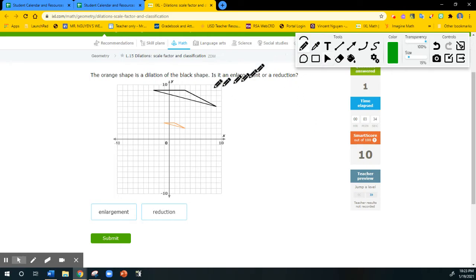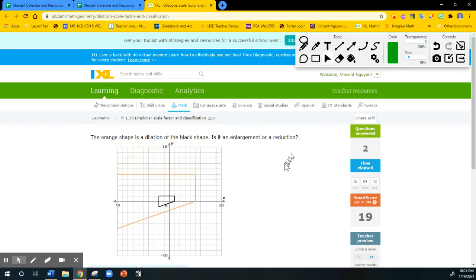This one is actually easier to tell whether it's enlargement or reduction, whether it gets larger or smaller. All we have to do is read the direction. So it says the orange is the dilation. That means the orange is the new shape. Well, if you look, the black one is larger, the new one is smaller. So it has to be a reduction. It got smaller. So this is a reduction. It didn't ask us how many times it got reduced. It just wanted to know whether it got larger or smaller. And this is pretty straightforward, easy to understand. But you have to read the description.